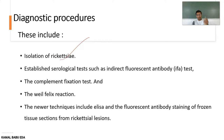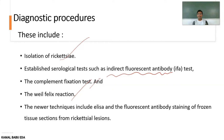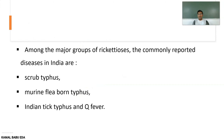The diagnostic processes include isolation of rickettsia and established serological tests such as the Indirect Fluorescent Antibody test, Complement Fixation test, and the Weil-Felix test. Newer techniques include ELISA and fluorescent antibody staining of frozen tissue sections from rickettsial lesions.